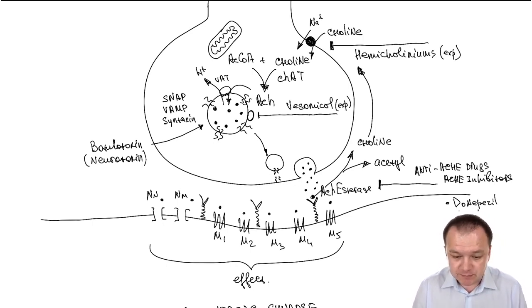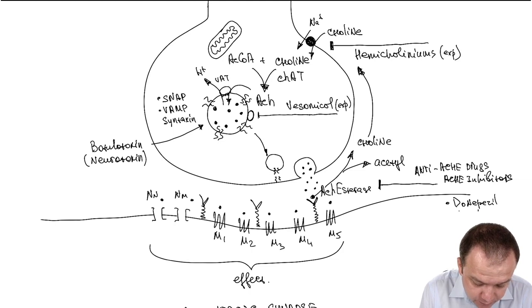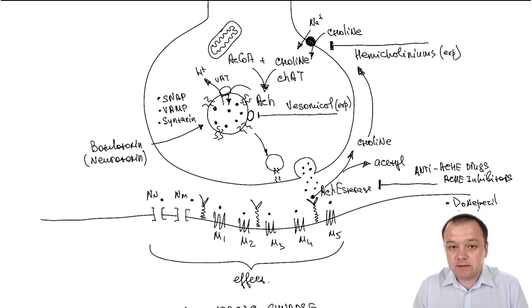It binds with vesicle-associated membrane protein or VAMP, and also interferes with syntaxin and can act on synaptobrevin. As a result, it prevents the release of acetylcholine in cholinergic synapses.